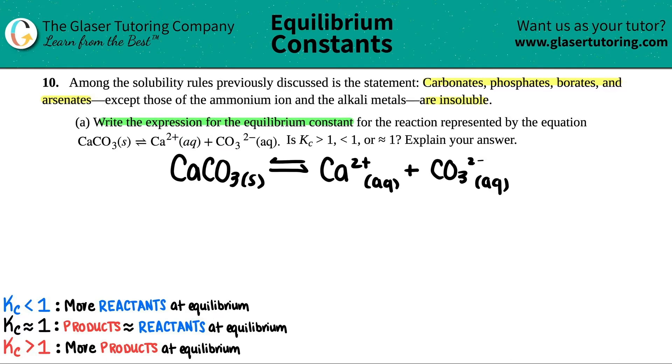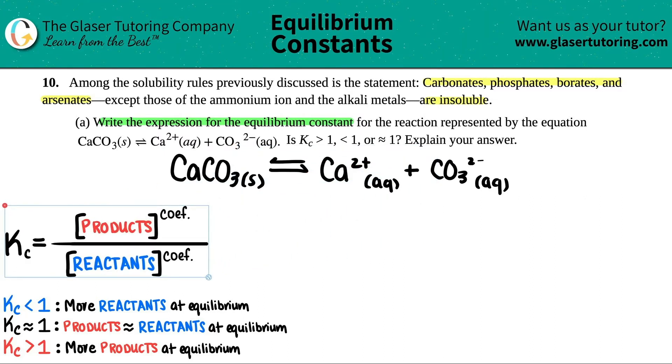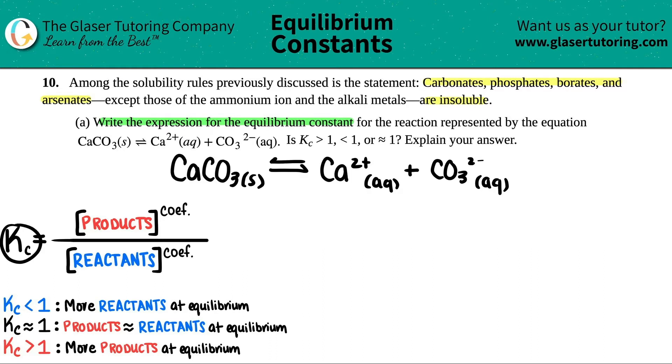So first thing is, let's write that equilibrium constant expression. That is this formula right here. It's a simple formula of just saying Kc, which is the equilibrium constant, equals products divided by reactants. So let's go for it.